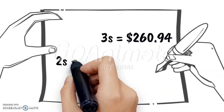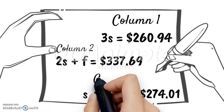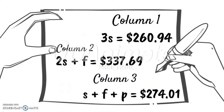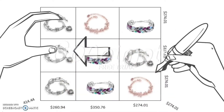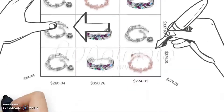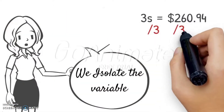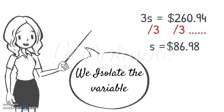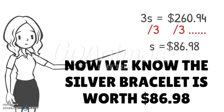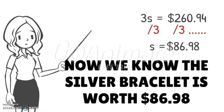Now we'll also create equations — one for column one, column two, and column three. We're going to begin with column one because there are three of the same variable. The equation is 3S = $260.94. If we divide each side by three, we see that one silver bracelet is worth $86.98.